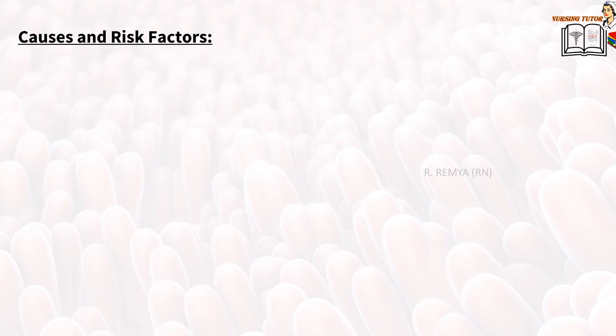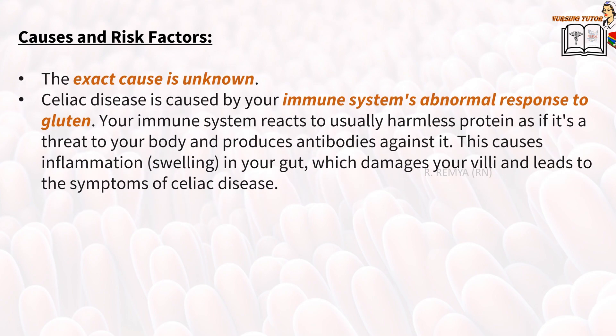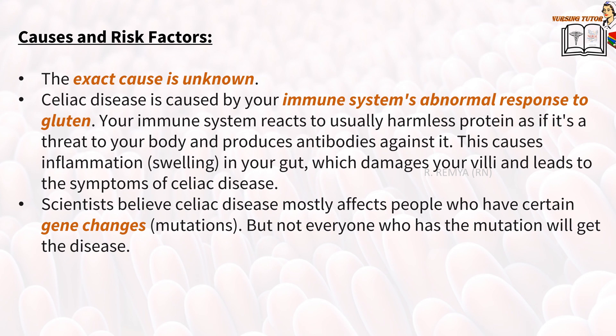Causes and risk factors for celiac disease: the exact cause is unknown. Celiac disease is caused by the immune system's abnormal response to gluten. The immune system reacts to this usually harmless protein as if it is a threat to the body and produces antibodies against it. This causes inflammation in the gut, which damages the villi and leads to the symptoms of celiac disease.